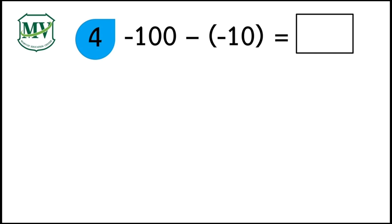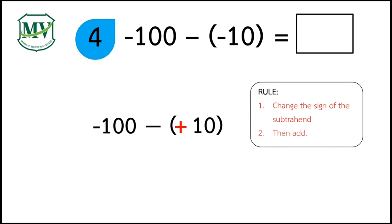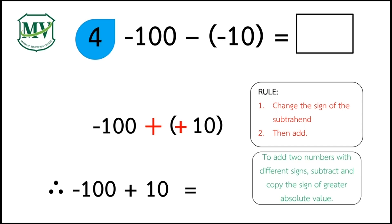Question number 4. Negative 100 minus negative 10 is equal to? Can you give me the answer? Copy the Minuend negative 100. Change the sign of the subtrahend to positive 10. Then change subtraction to addition. Add negative 100 and 10. The answer is negative 90.